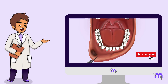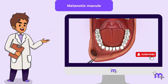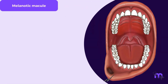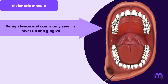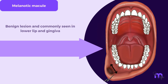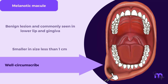Next on our list was the melanotic macule. This is a benign lesion most commonly seen in the lower lip and gingiva. The key feature that differentiates it from malignant melanoma is its size, being smaller than 1 cm. It is well circumscribed, oval or irregular.